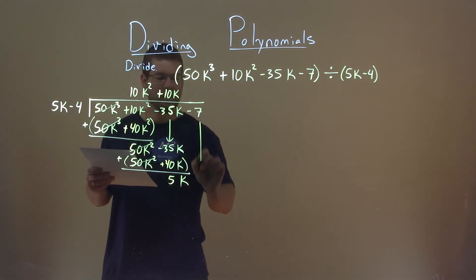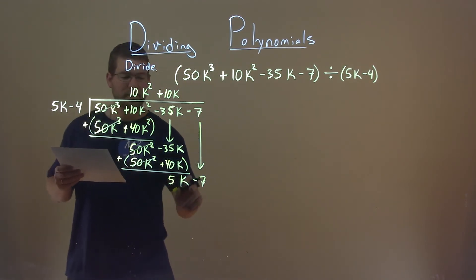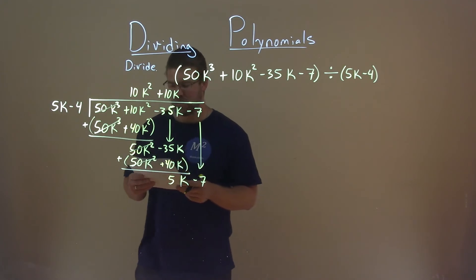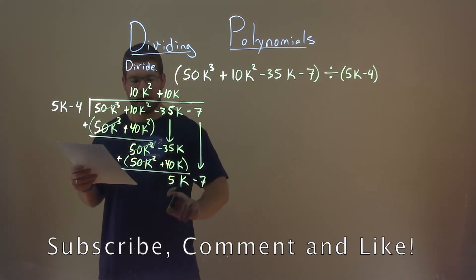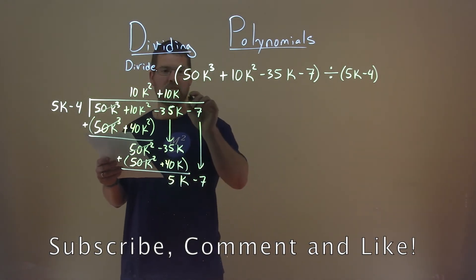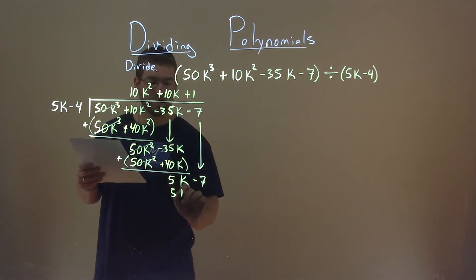This time, I won't forget to bring down the minus 7. So we have 5k minus 7, and again, we're going to do the same thing. What times 5k gets me 5k, and that's just a positive 1. 1 times 5k is 5k. 1 times a negative 4 is a negative 4.